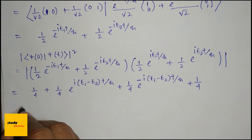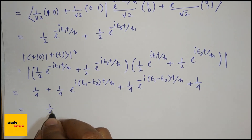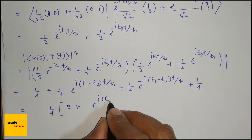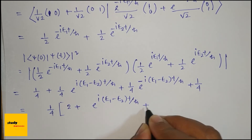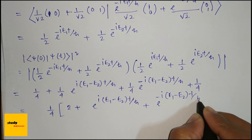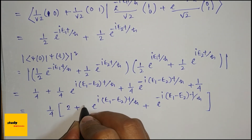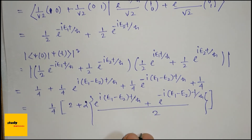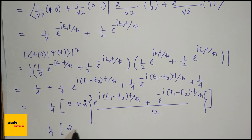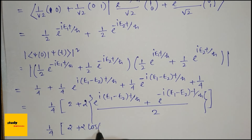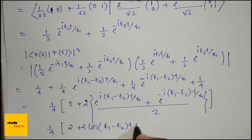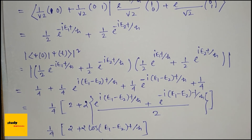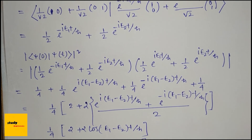So this becomes 1/4 times (2 plus e^{i(E1−E2)t/ℏ} plus e^{−i(E1−E2)t/ℏ}), which equals 1/4 times (2 plus 2 cos((E1−E2)t/ℏ)). This simplifies to 1/2 times (1 plus cos((E1−E2)t/ℏ)), which is the final answer.